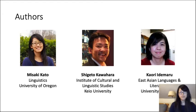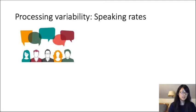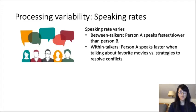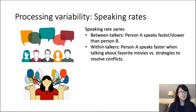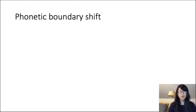When listening to speech, we process all kinds of variability. One example of this variability is in speaking rates. Person A may speak faster or slower than person B, and speaking rate also varies within the same talker. As listeners, we take this speaking rate variation into account when processing speech. One way we adjust for different speaking rates is by shifting the boundaries of sound categories depending on how fast or slow the overall speech is. This is called phonetic boundary shift.